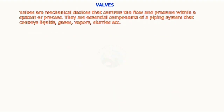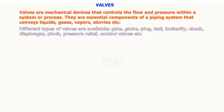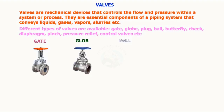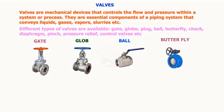Valves are mechanical devices that control the flow and pressure within a system or process. They are essential components of a piping system that conveys liquids, gases, vapors, slurries, etc. Different types of valves are available: gate, globe, plug, ball, butterfly, check, diaphragm, pinch, and pressure relief. Control valves are the commonly used valves.